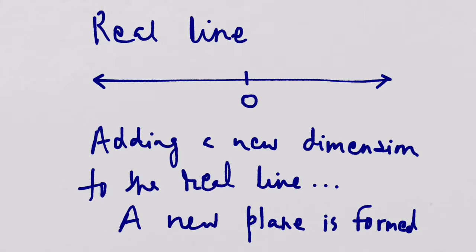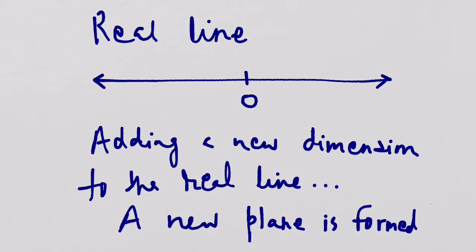Here we come with the geometrical representation of complex numbers. First of all, we learn about the real number line. The real number line is a one-dimensional line which has a zero, and all sorts of real numbers can be plotted on it. When we talk about the geometrical representation of a complex number, we need to go beyond this.